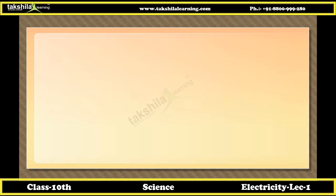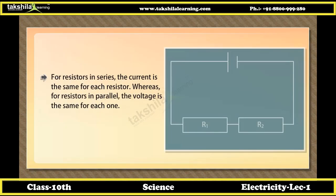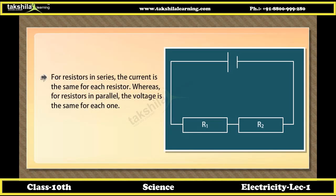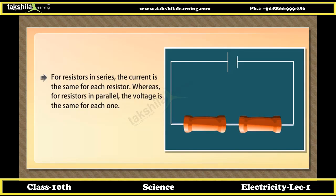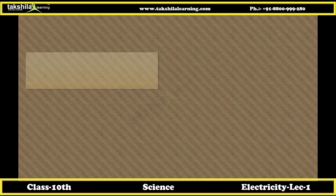Did you know? For resistors in series, the current is the same for each resistor, whereas for resistors in parallel, the voltage is the same for each one.